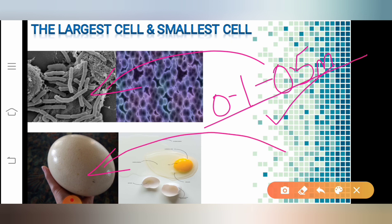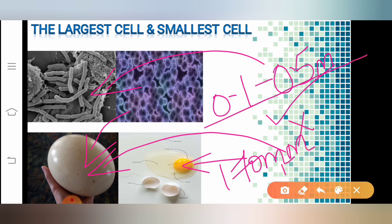If I talk about the largest cell, you can observe this. The largest cell is the cell present in the egg of the ostrich. The size of this cell measures approximately 170 mm to 130 millimeters.